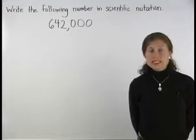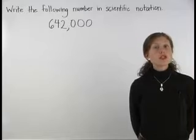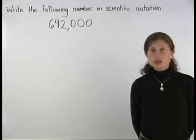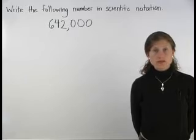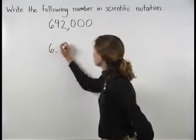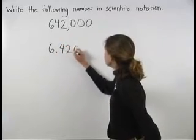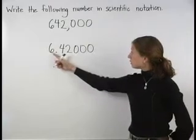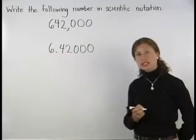To write a number in scientific notation, first write a decimal point in the number so that there's only one digit to the left of the decimal point. So here, we have 6.42000. Notice that there's only one digit to the left of the decimal point.